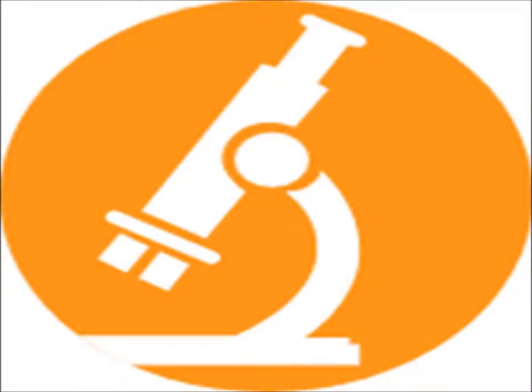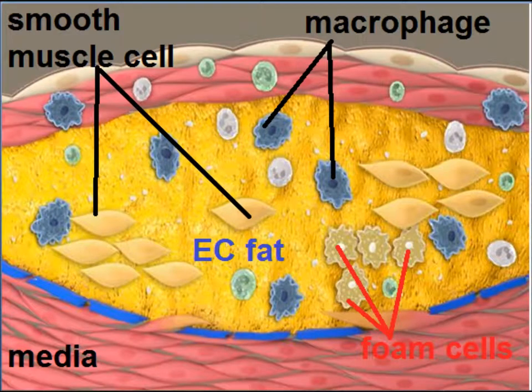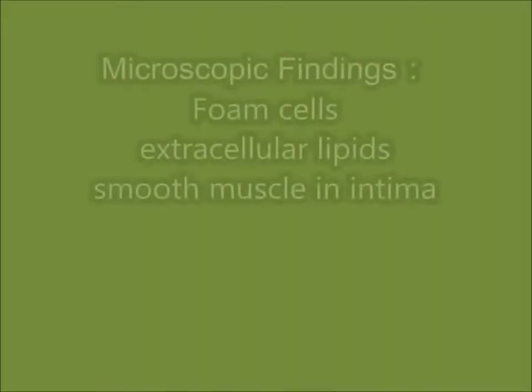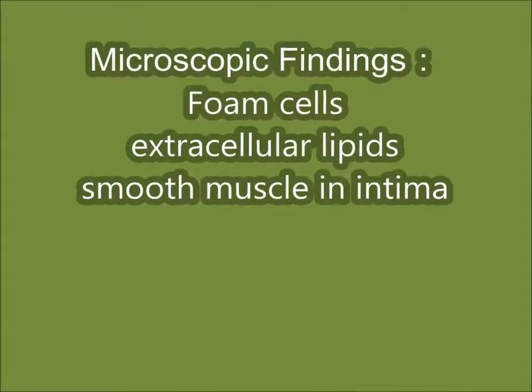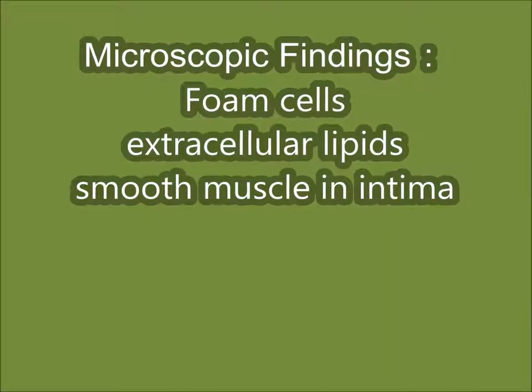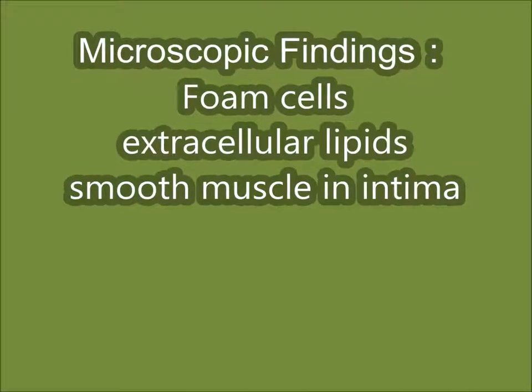These patients are usually hypotensive and lab studies reveal raised serum troponin levels. Microscopically, if you see the atherosclerotic plaque under the microscope, it consists of a plaque in the intima with smooth muscle cells, macrophages, and foam cells.